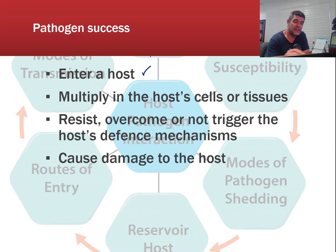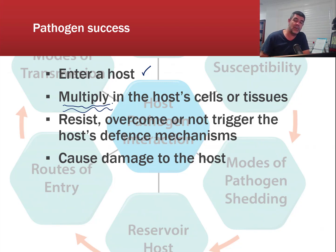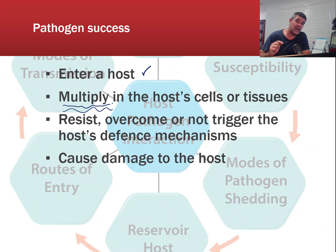Once it's there, it needs to multiply - it needs to increase in numbers. That can happen on the body of the host, or it may happen within the host cells or tissues. Sometimes pathogens may actually be able to find places within the immune response system that actually help to protect them, allowing them to hide from the host in order to carry out this multiplication process.